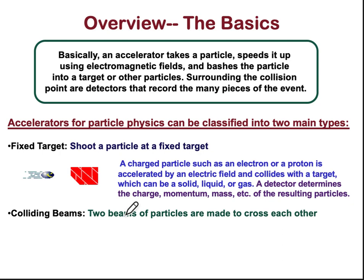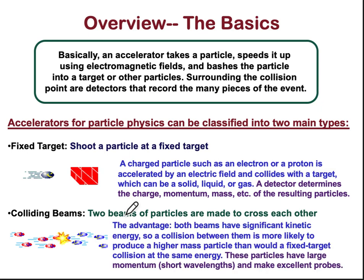The next type is colliding beams — two beams of particles are made to cross each other. When high-energy particles coming from opposite directions collide with each other, high-energy massive particles are generated. By using this principle, you can learn about many more fundamental particles and their existence.